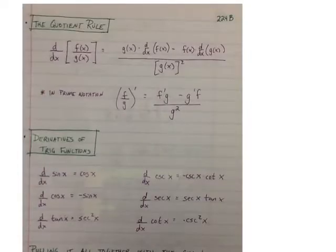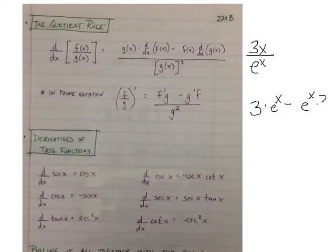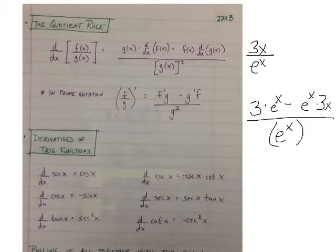We should also know the quotient rule, so if we have a function divided by a function, the derivative of that is, in prime notation, f prime g minus g prime f all over g squared. So if we had 3x over e to the x, and we wanted to find the derivative of that, we have f prime times g minus g prime times f all over g squared.